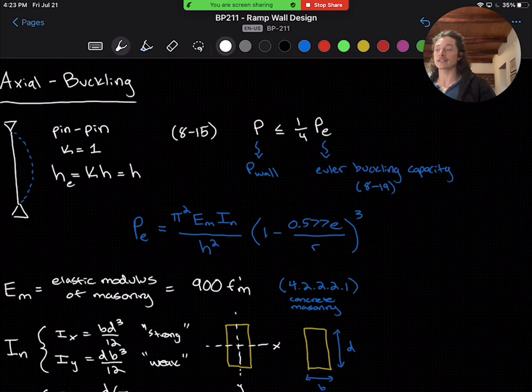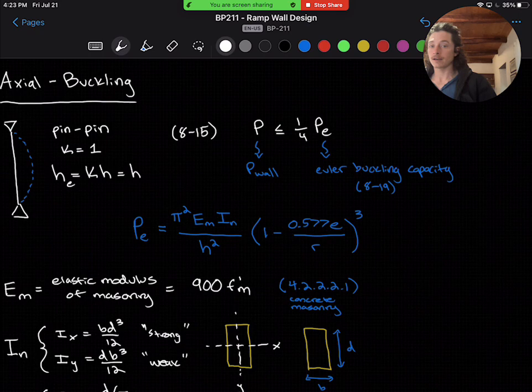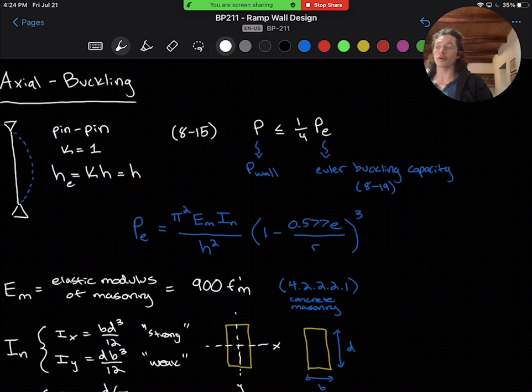giving us an effective length factor of k equals 1, allowing our effective length, he, to be kh or just h. And we'll move forward using that value.